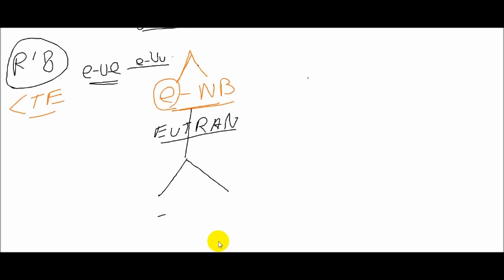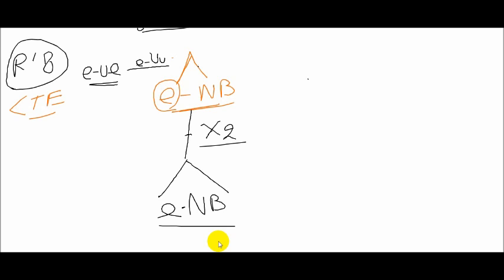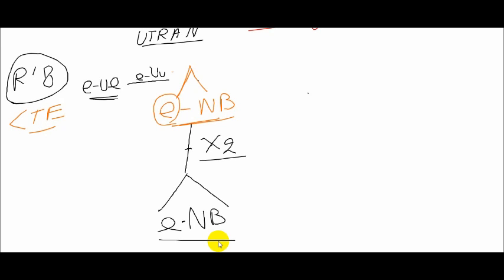This type of activity has to be performed—handover type of thing—now has to be performed between two eNodeBs, and the interface we have here we call as X2 interface. They have to communicate with each other, so we have X2 interface now.